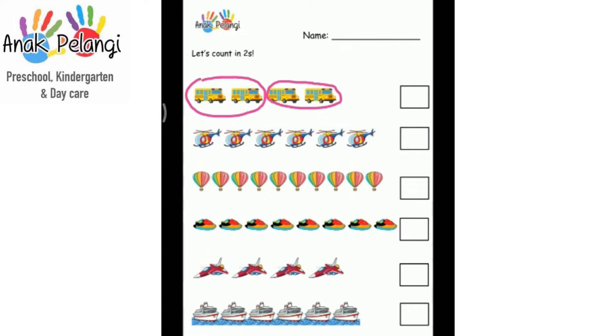Let's count them in twos. One, two. Three, four. Two, four. How many buses are there? Four. Write four in the box.